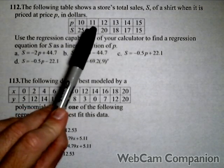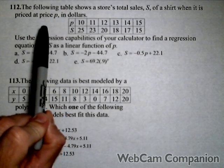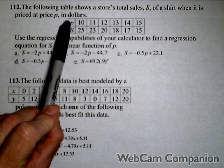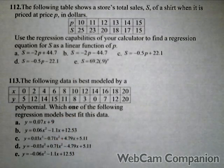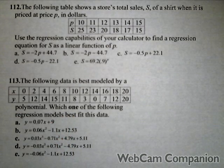The following table shows us total sales S of a shirt when it's priced at P dollars. Our input is P dollars, our output is sales. We're going to use the regression capabilities of the calculator to find a linear regression equation.